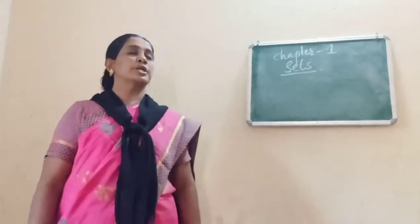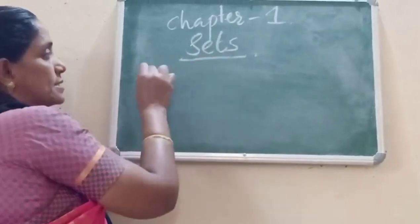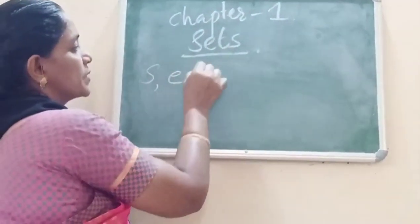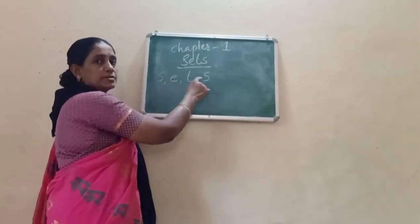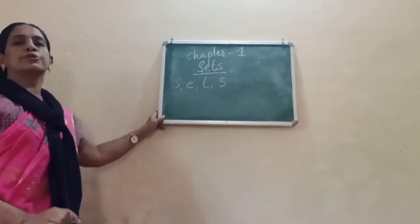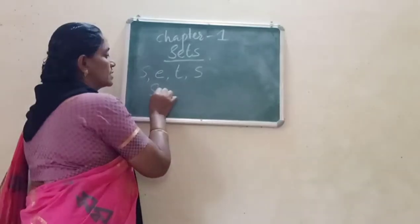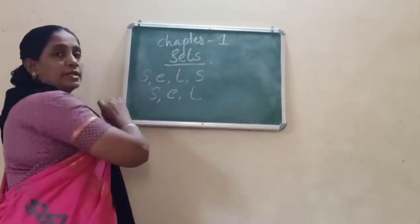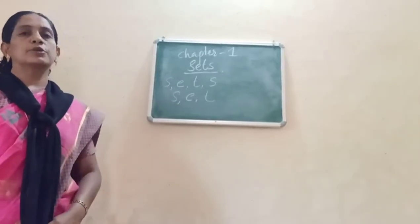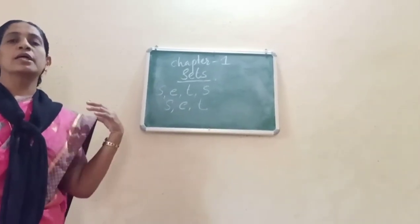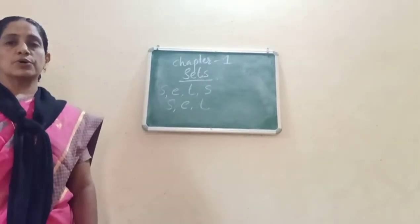What is the meaning of distinct? It means elements are not repeated. For example, there are letters, but in a set the elements are not repeated. A set is a well-defined collection of distinct objects.